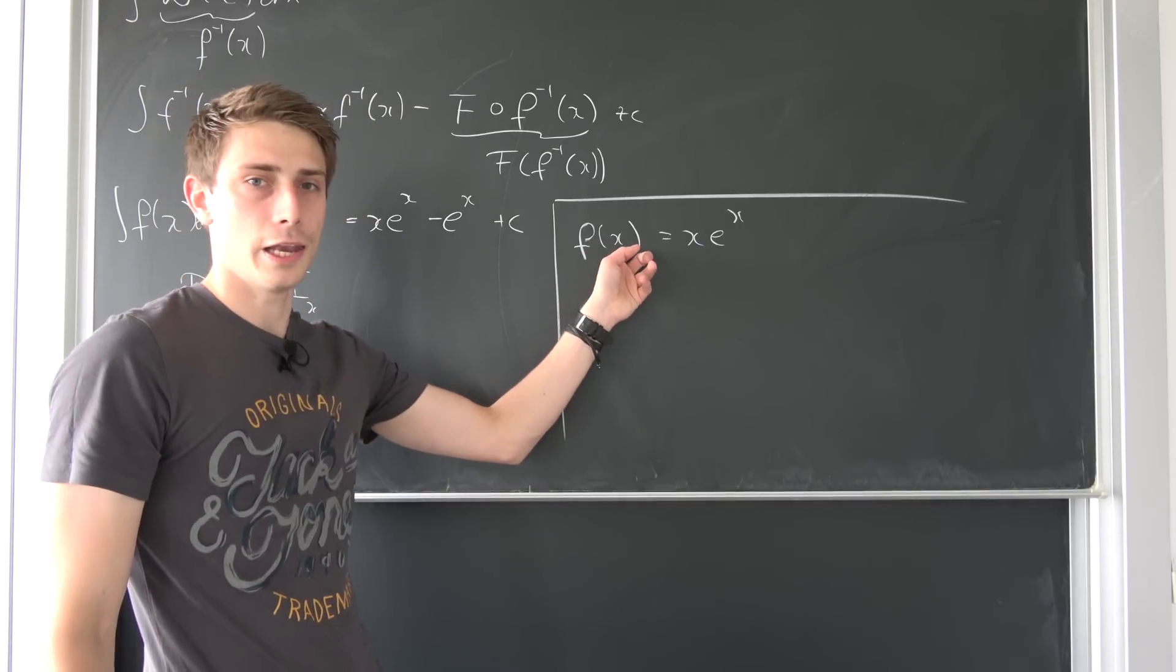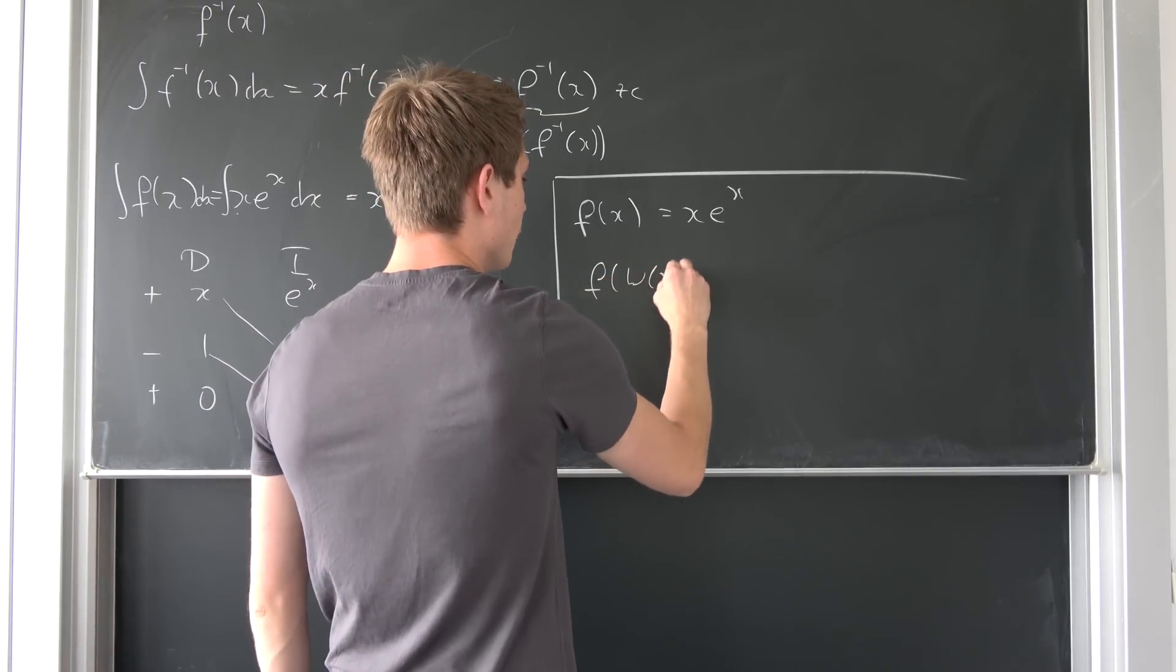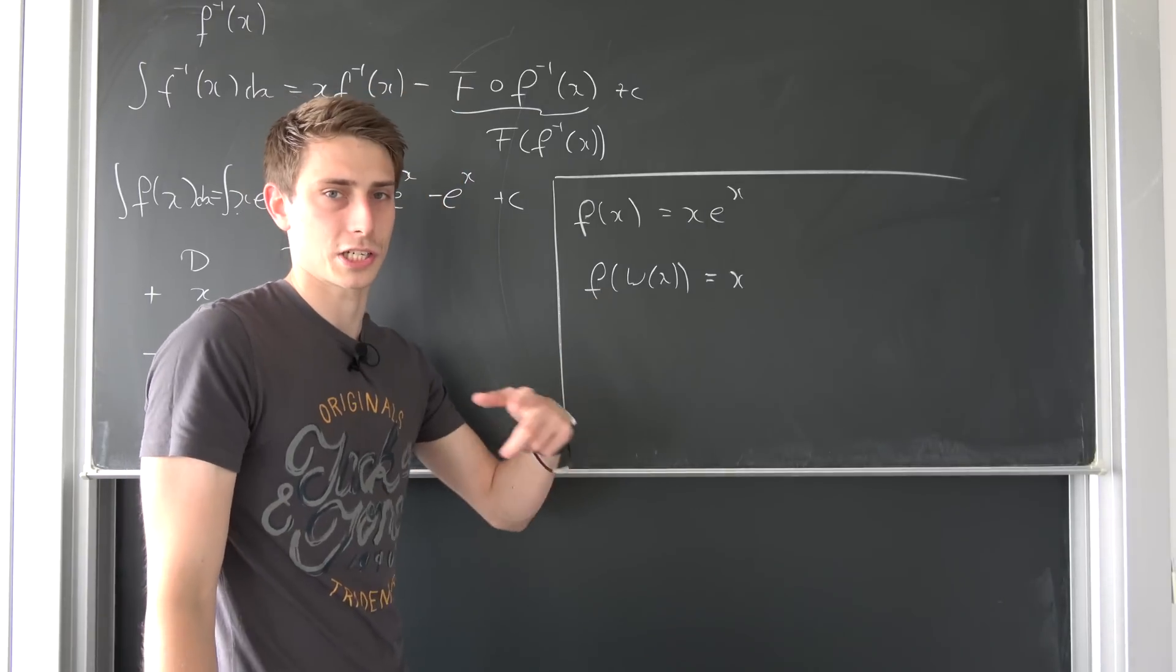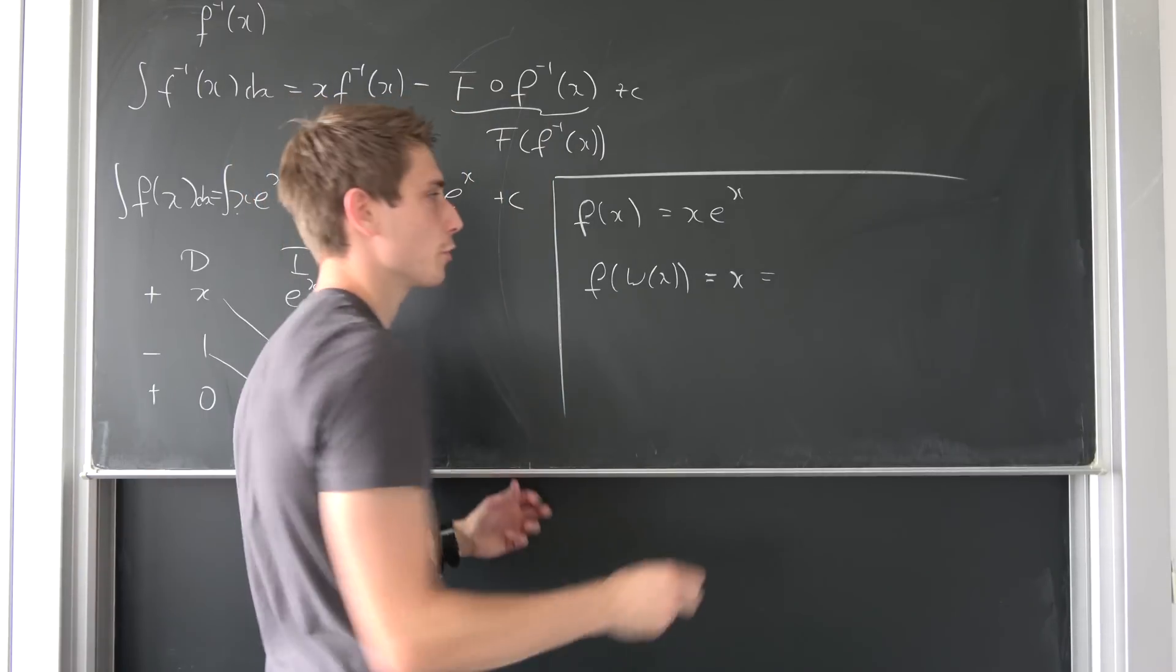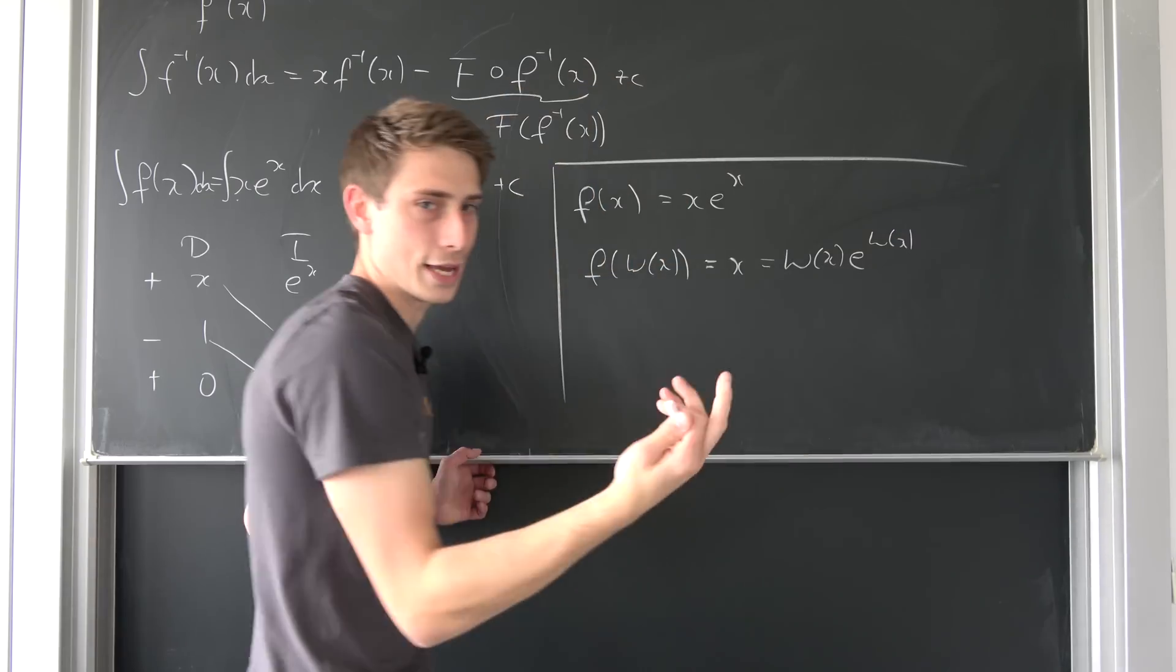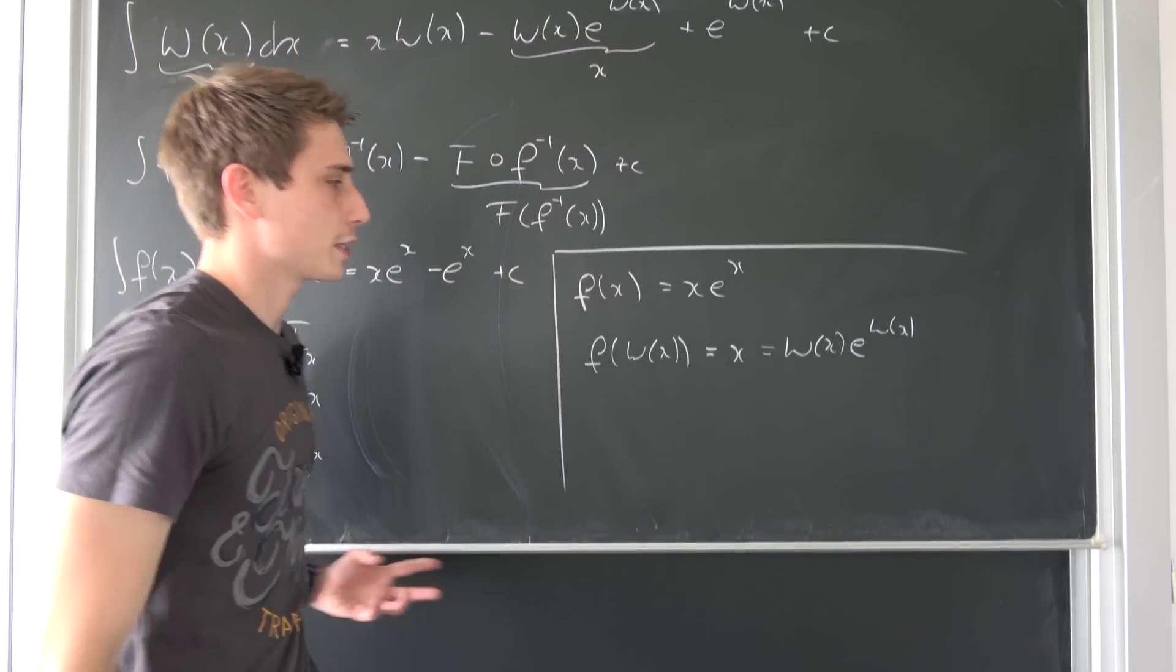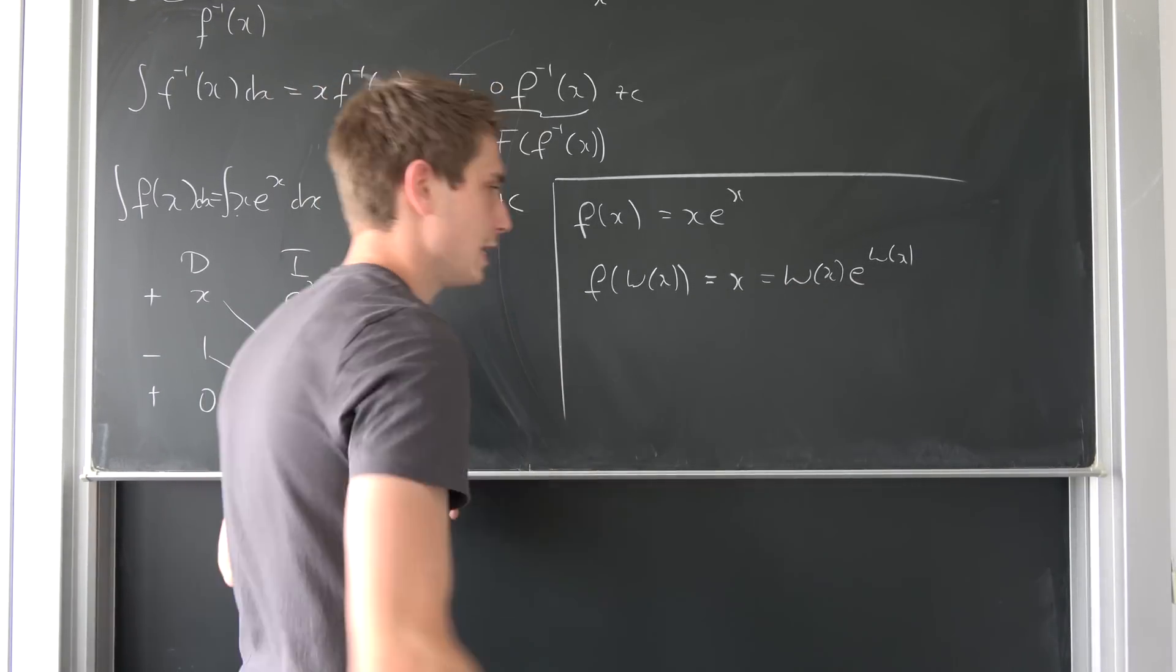Notice if we would plug in Lambert of x as the argument in here, so f of Lambert of x, we would end up with the argument itself at first because function on inverse function is just the argument, and on this side we just have to plug in the Lambert of x in all of those x's. And as you might notice, this thing right here is exactly that. So this is just x. And we can divide both sides by Lambert of x to get an expression for e to the Lambert of x.